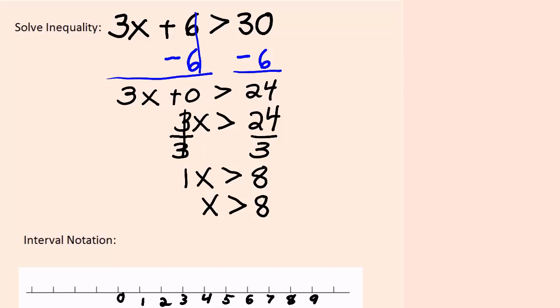There's 8 on the number line. I put a parenthesis through 8 and an arrow going off to the right, just the way the inequality sign is pointing to the right.